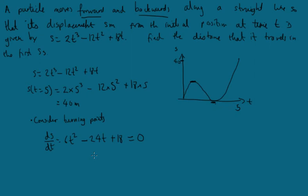2 times 3 is 6t squared minus 12 times 2 is 24t plus 18. We want to find out when that's going to be 0. We are going to factorize this equation. I'm going to take the 6 out because we don't need it. It'll be t squared minus 4t plus 3 equals 0. You can divide through by the 6. We'll get t minus 1, t minus 3 equals 0. So t must be 1 or 3.